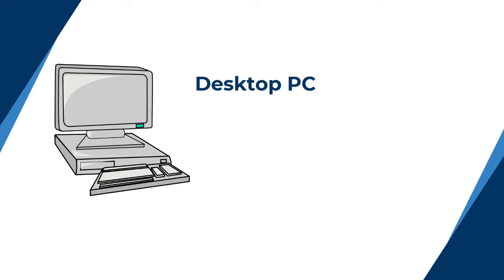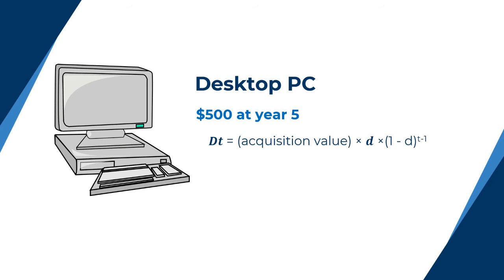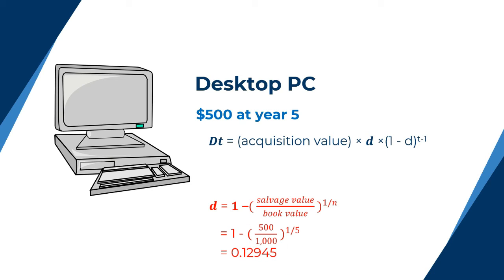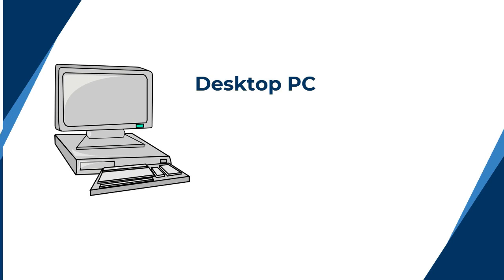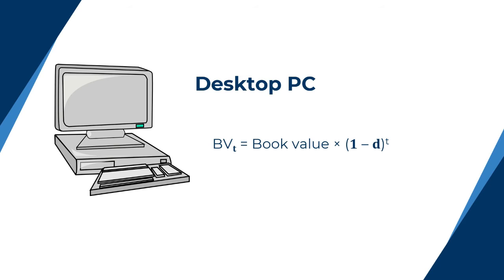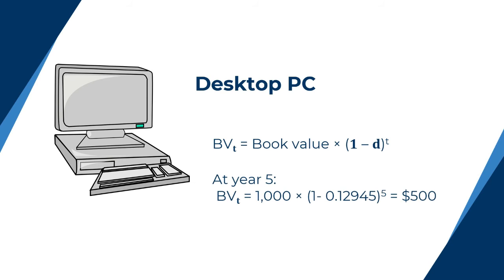Now considering the declining balance method and using the same previous example, the salvage value of the computer was $500 at year 5. To calculate the depreciation at year T, we use the following formula: it is equal to the acquisition value of the PC times d times (1 minus d) to the power T minus 1, where d is 1 minus (salvage value over book value) to the power 1 over n, which in this case is approximately 0.13. And to calculate the book value of this PC at year T, we use this formula: it's equal to book value times (1 minus d) to the power T, which at year 5 is equal to $500. So we got the same result.